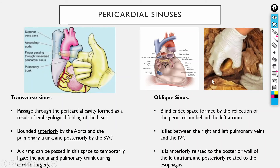The oblique sinus is reached by going inferior and posterior to the heart; it is a blind-ended space — you can only enter from one side. It lies between the four pulmonary veins (right and left) and the inferior vena cava. It is anteriorly related to the posterior wall of the left atrium and posteriorly related to the esophagus.